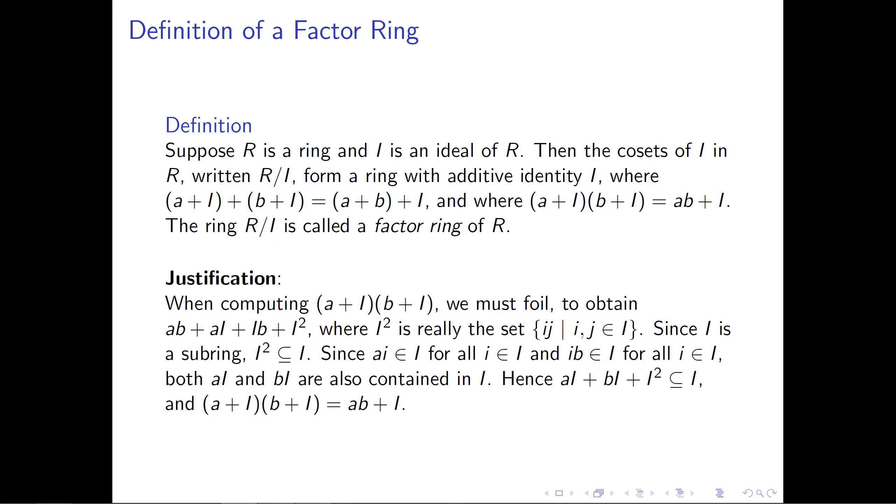Now what I'd like to do is justify why that multiplication definition makes sense. So if we were to take the cosets (a + I) and (b + I) and FOIL them out, what we would obtain is the element ab, the set aI, the set Ib, and the set I².